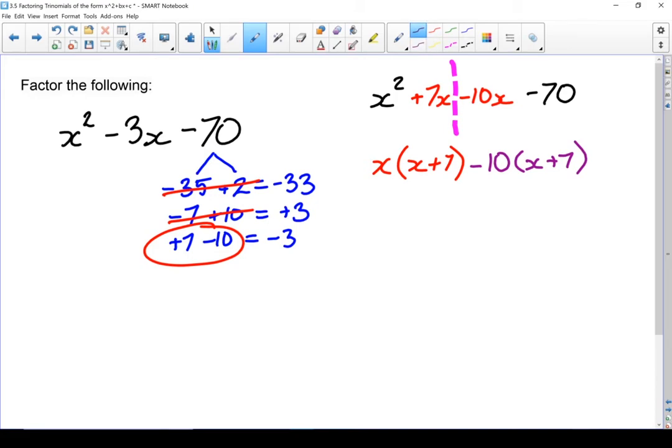Almost done. I'm going to take this x plus 7 that's in both of them. Write it out front. And my second binomial is whatever the leftovers are. And that's an x minus 10. Once again, watching the signs to make sure you've got it right. And that is my trinomial factored.